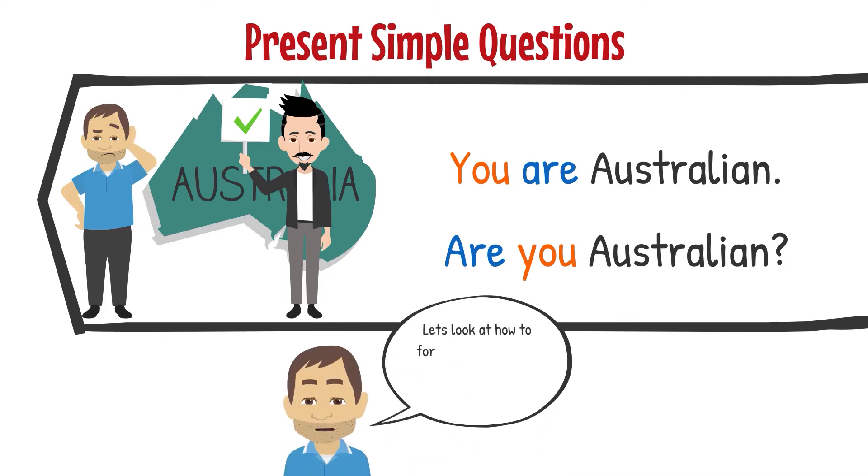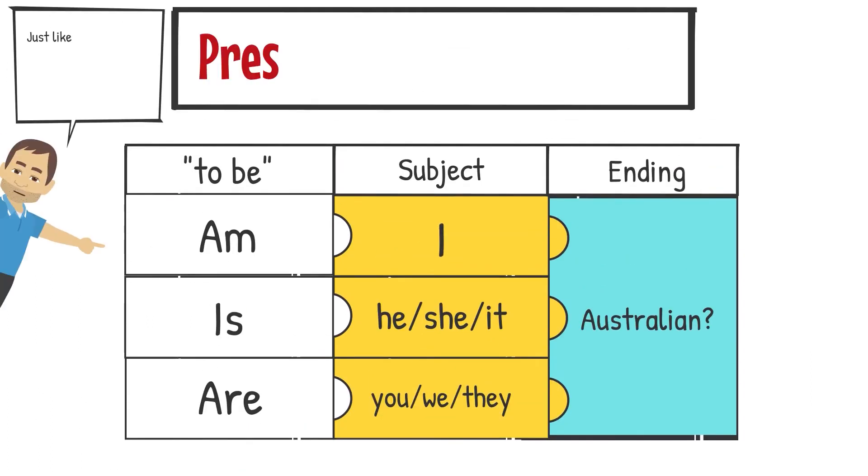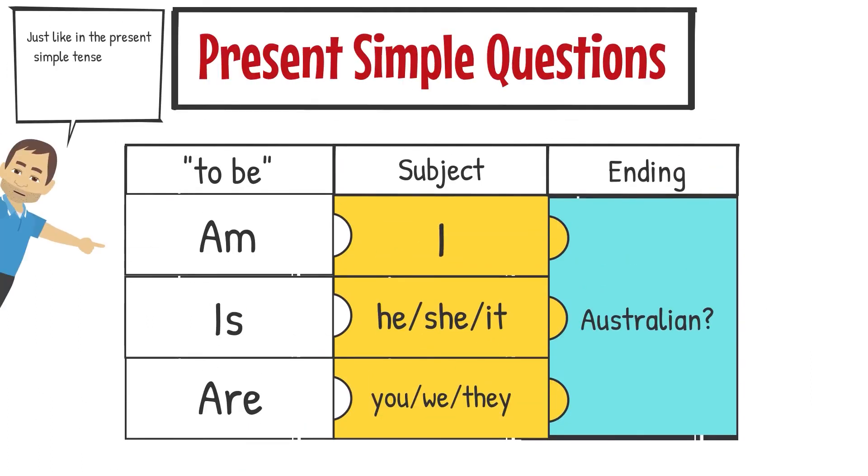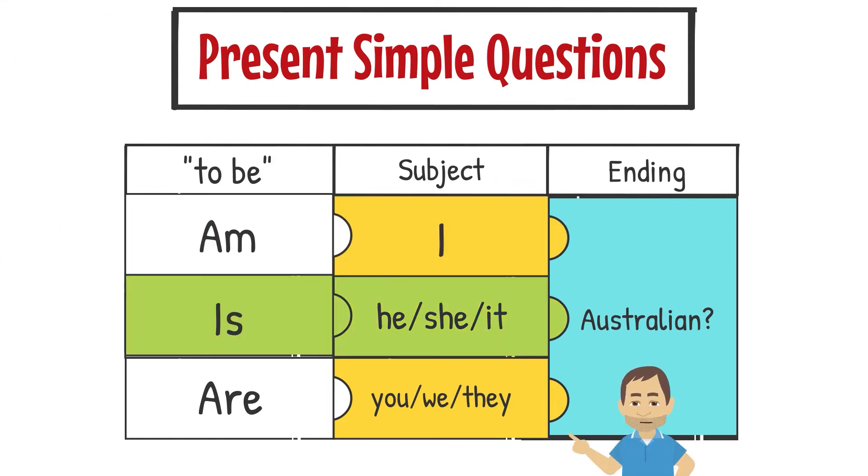Let's look at how to form present simple questions with different subjects. Just like in the present simple tense, to be changes depending on the subject. Am I? Is he? Is she? Is it? Are you? Are we? Are they?